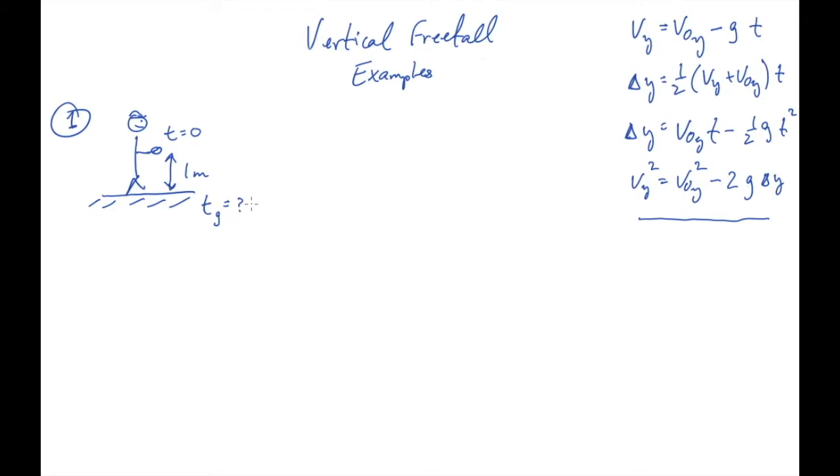Probably the easiest equation to use for that is this third equation, delta y equals v naught y t minus half g t squared.